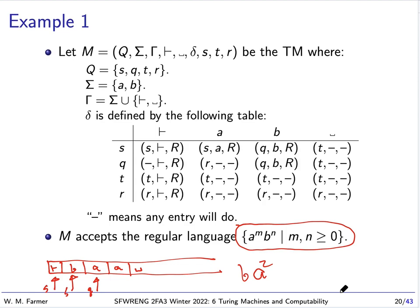Examples with Turing machines can be very complex because these machines are quite powerful. We can go back and forth on the tape, write down whatever we want, and the tape is infinite to the right so we have lots of space to work. There's great power here, and as a result, if we're going to do something sophisticated with a Turing machine, the transition function is likely to be very big and complicated.